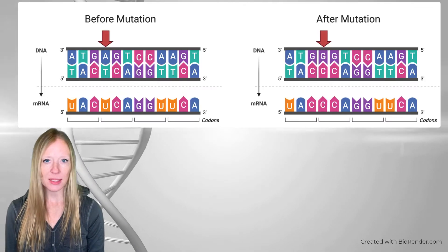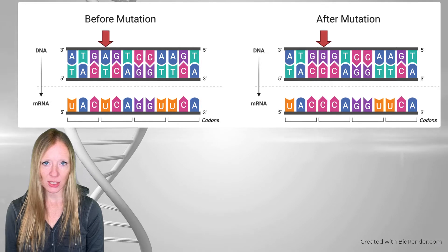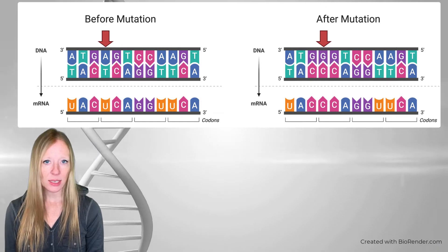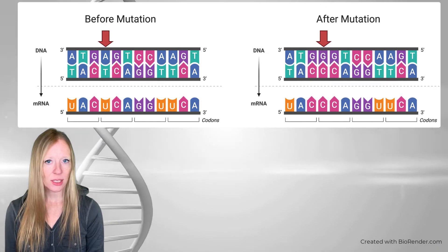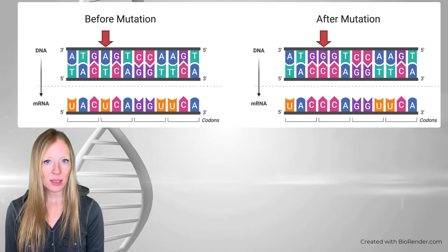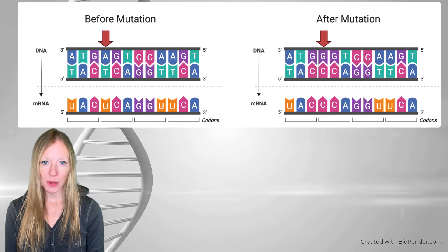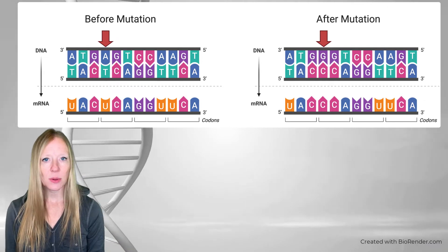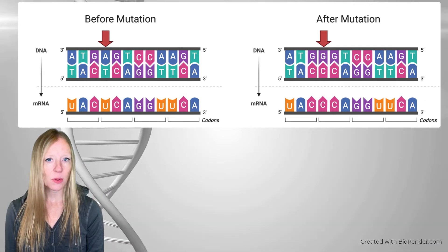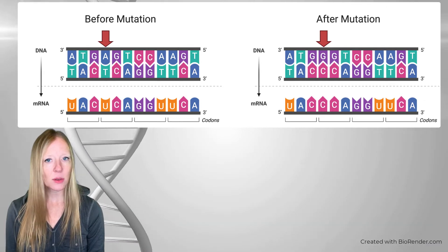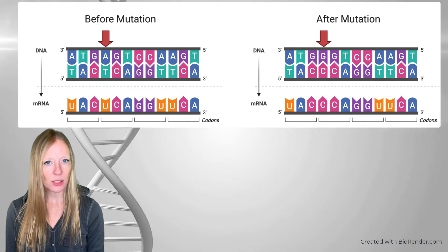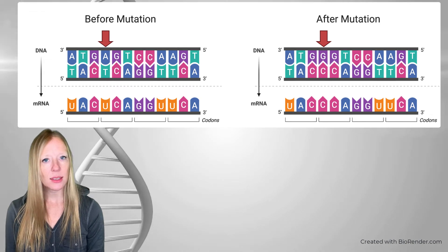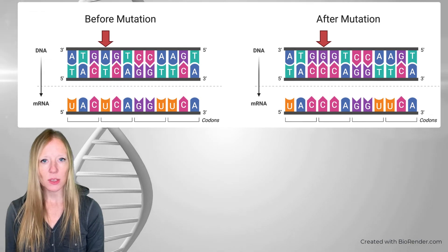A point mutation is a base substitution. In other words, the DNA sequence changes at a single base from the original base to a different one. For example, let's say that we have this sequence and a single base is changed such that this A is replaced with a G.